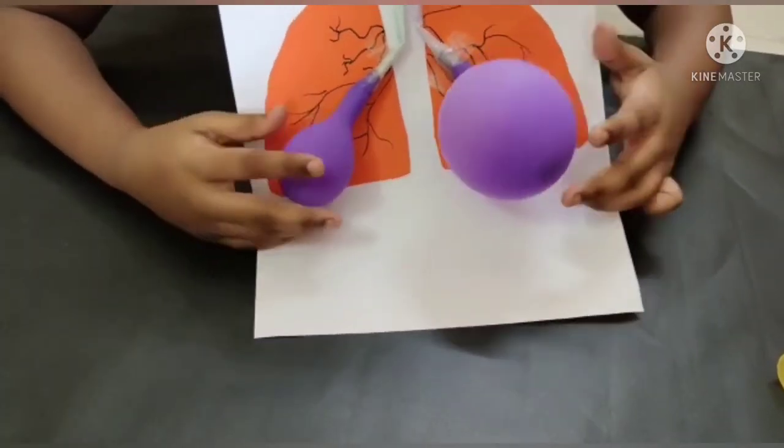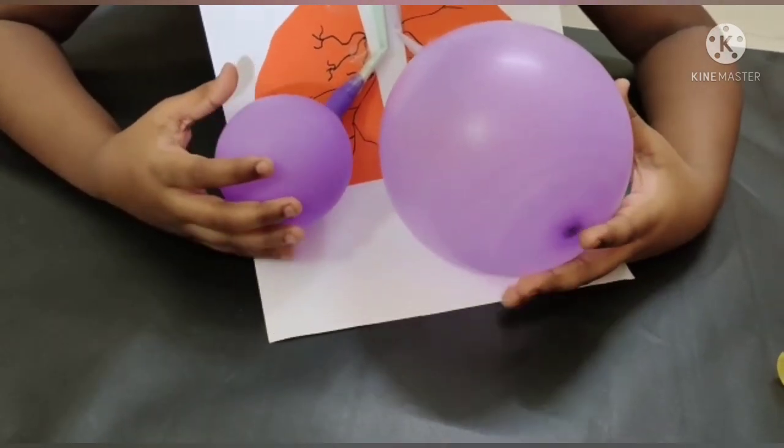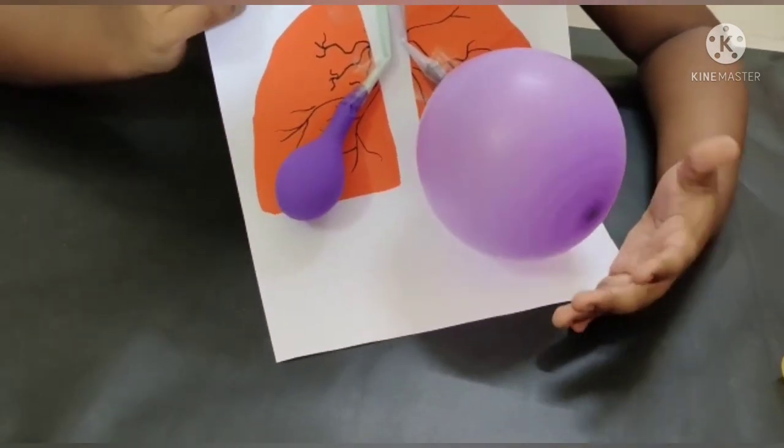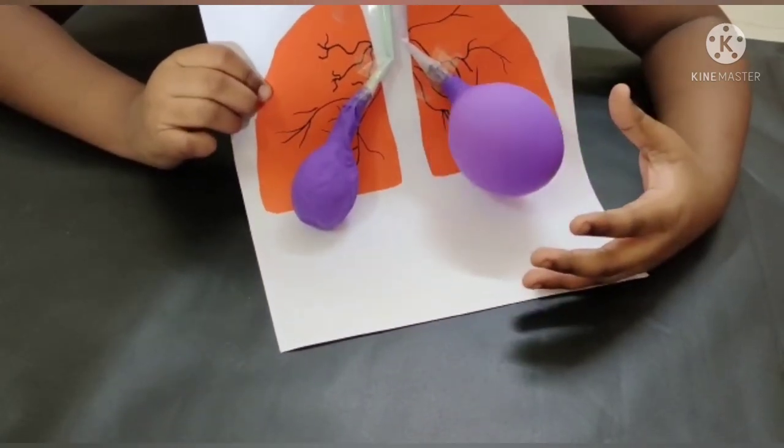Blow the balloon through the straw. The balloons are the lungs here. When we inhale, the lungs bulge because they are filled with air. When we exhale, they come back to their shape.